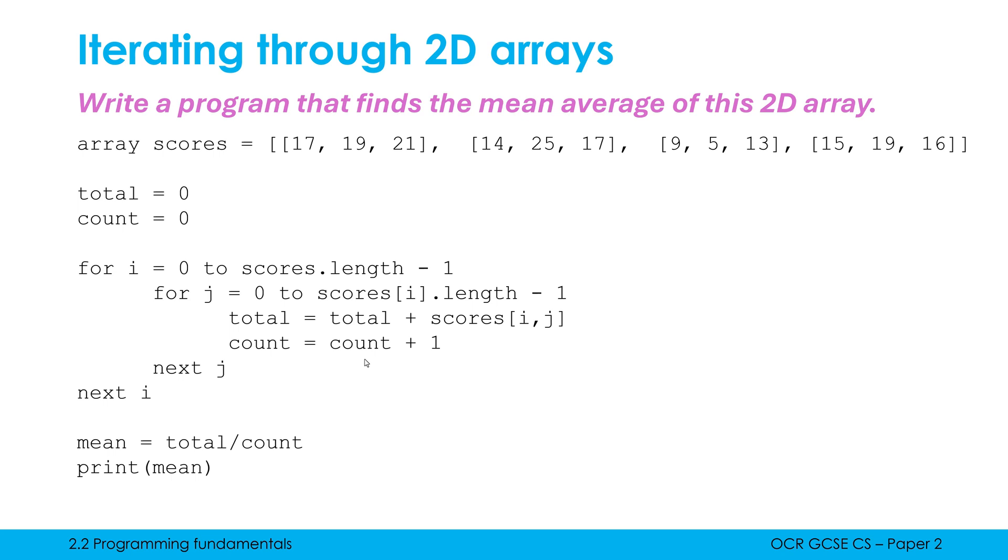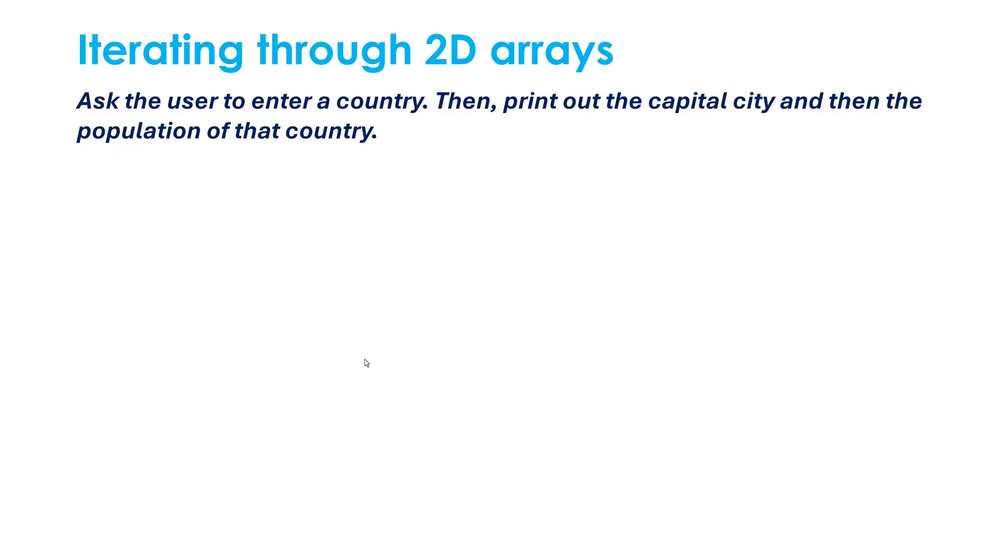It is important you understand this double for loop structure because you could need it in a tricky question. That being said, actually a lot of the time that questions on 2D arrays don't actually require that double for loop structure. They might still require one for loop, but because they're not checking every single element or because there's a predictable pattern, you maybe don't need that double for loop structure. So this is an example of where this is the case.